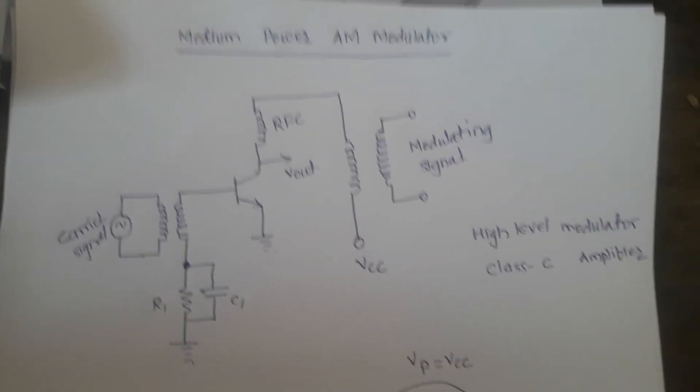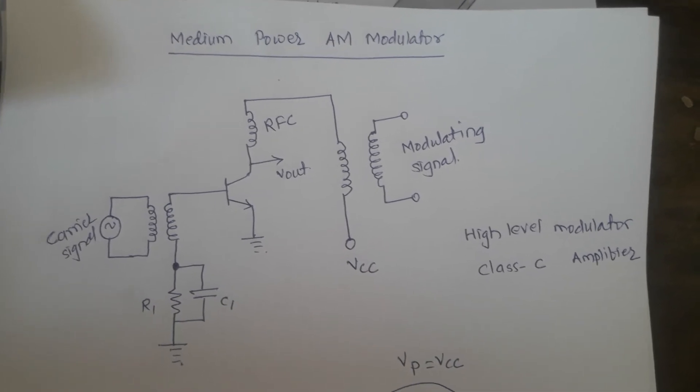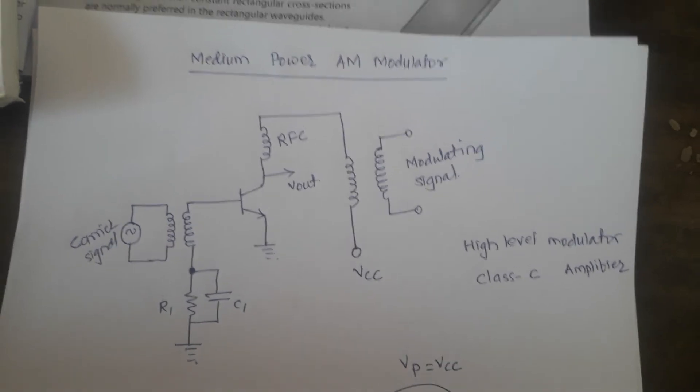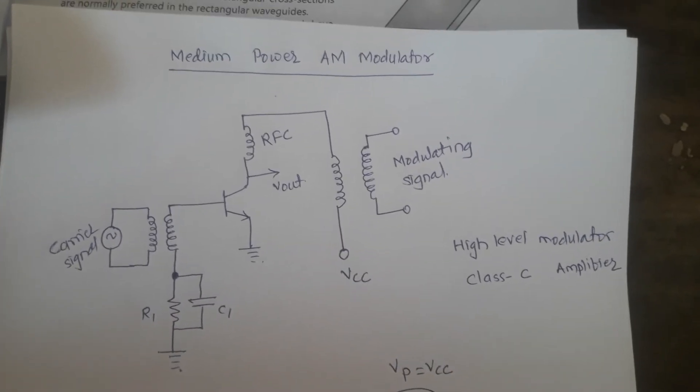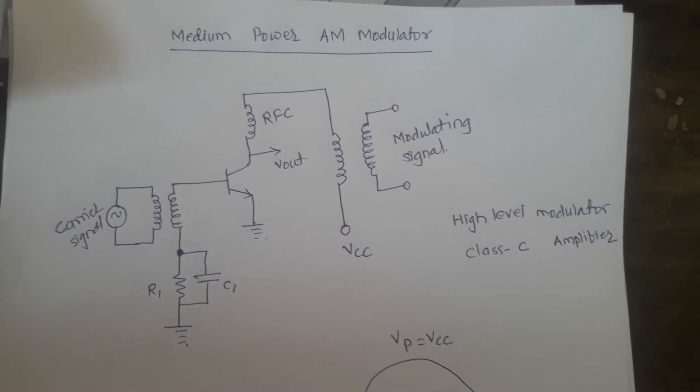All of you are observing here the circuit of medium power AM modulator. It is a transistorized circuit and the modulation takes place at the collector side. So it is also called as the collector modulation stage.